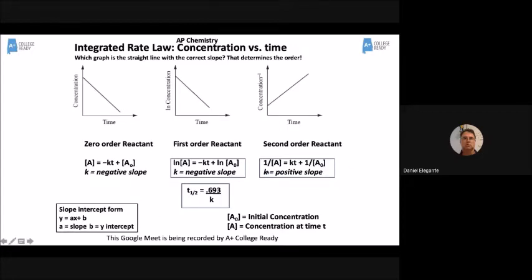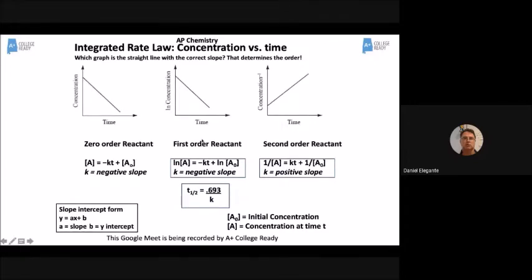These integrated rate law equations are also on the equation sheet, and they're all arranged in the form Y equals MX plus B — slope-intercept formula. So if you need to find the value of K for a first-order reaction, just take the slope of the line. For second order, take the slope of that line as well.